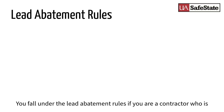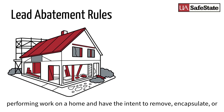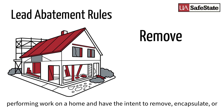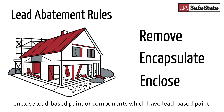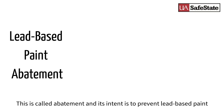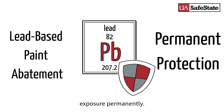You fall under the lead abatement rules if you are a contractor performing work on a home and have the intent to remove, encapsulate, or enclose lead-based paint or components which have lead-based paint. This is called abatement, and its intent is to prevent lead-based paint exposure permanently.